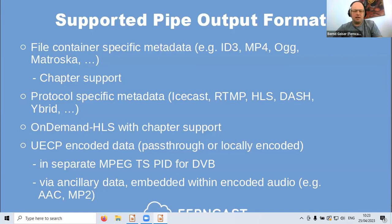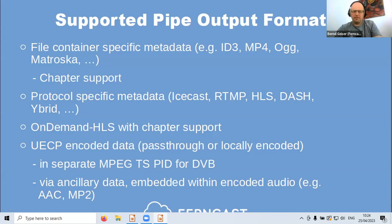You can use our generated UECP in the MPEG-TS. There are two options: reserve a separate stream in the MPEG-TS — a separate PID for the metadata — or you can embed the UECP metadata in the encoded audio via ancillary data, which is commonly used and possible for AAC or MP2.